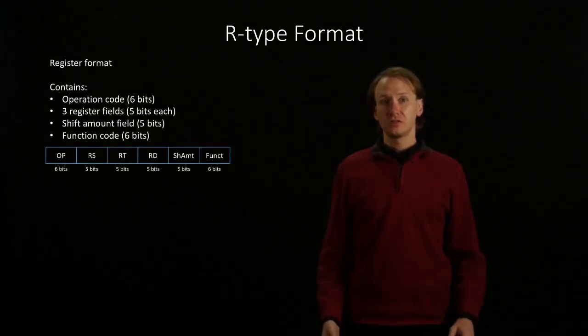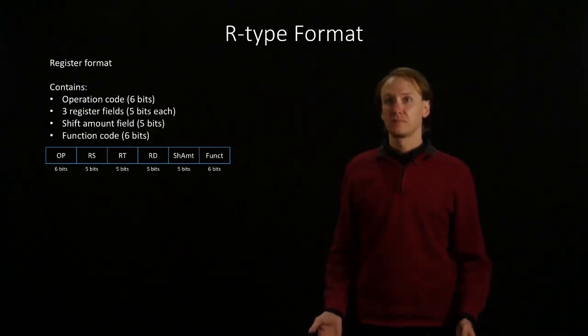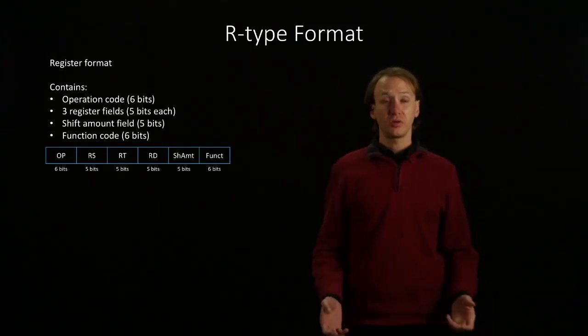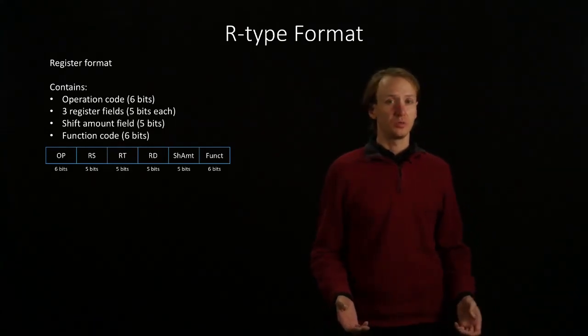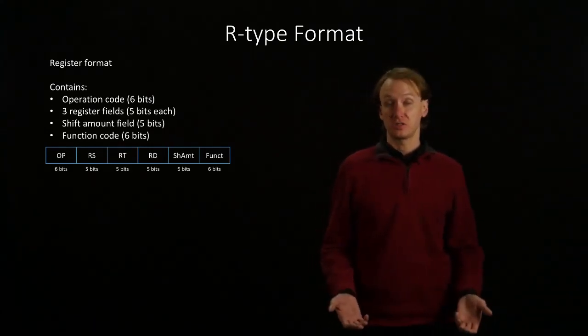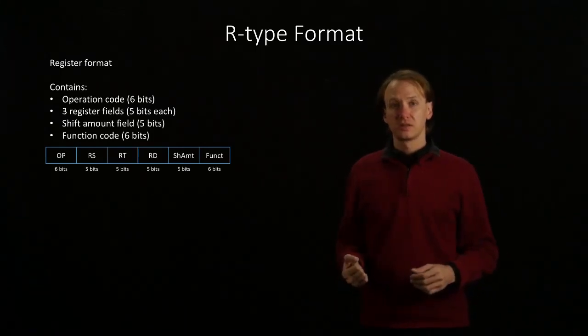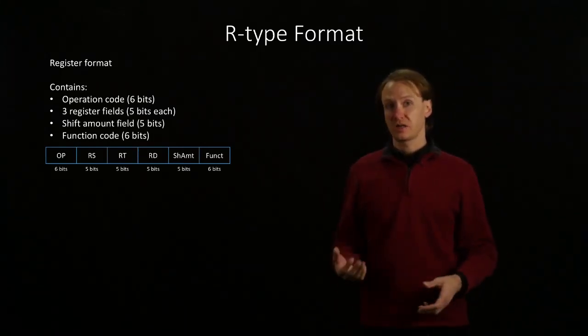The R-Type format is used when we have a lot of registers. In this case, we'll have three register fields that we can use to access any of our 32 registers. This will be useful for a lot of our arithmetic instructions.